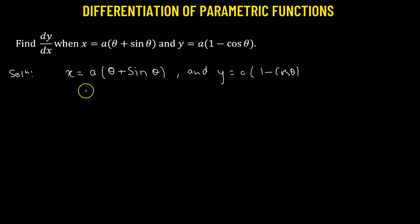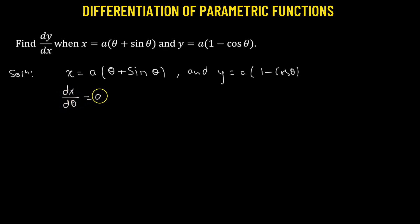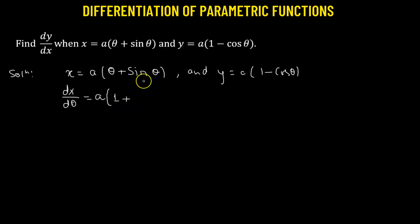We'll take the derivative of both functions x and y with respect to theta. First, the derivative of x with respect to theta: a is a constant, so that gives a multiplied by derivative of theta with respect to theta, which is 1, plus derivative of sine theta, which is cosine theta. So dx/dθ = a(1 + cosθ).